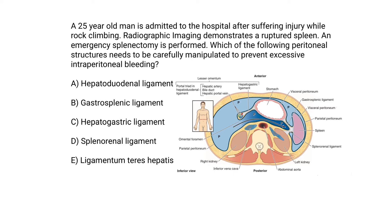Answer A: the hepatoduodenal ligament. We know that the hepatoduodenal ligament contains the portal triad. That's not going to involve the splenic artery, so we can eliminate it.